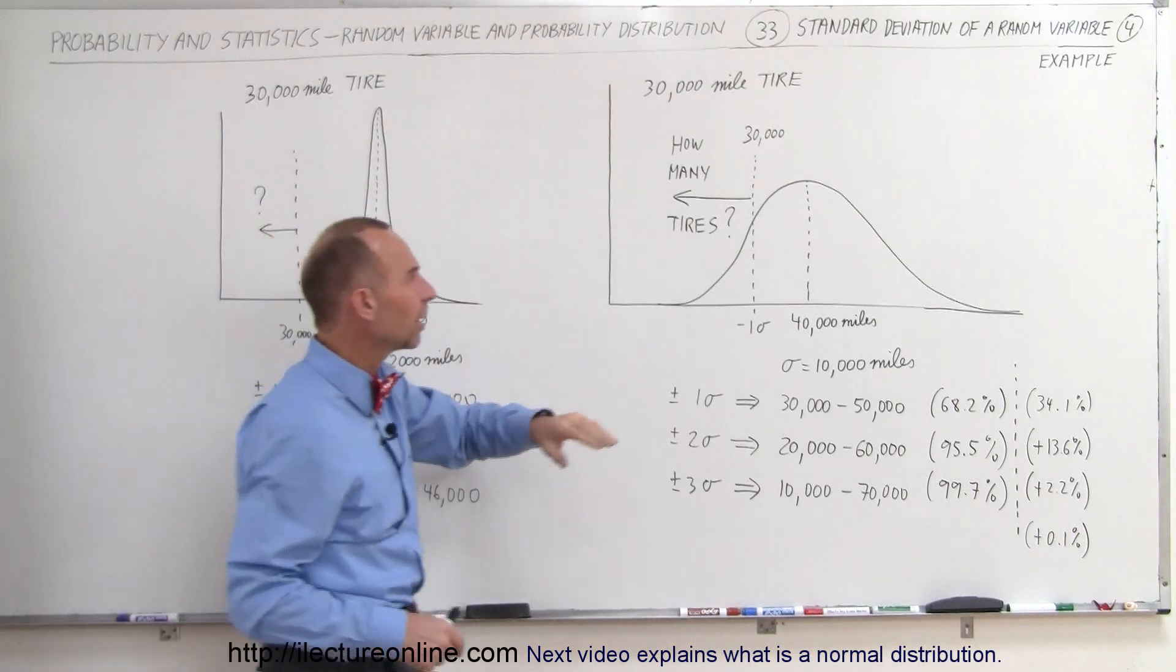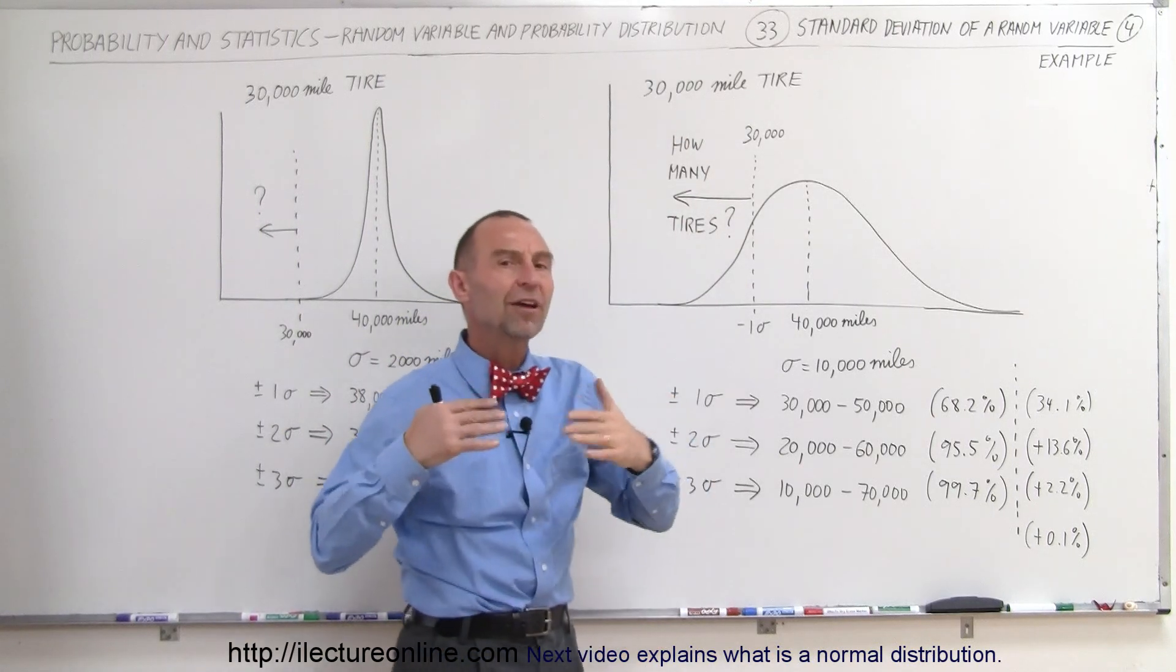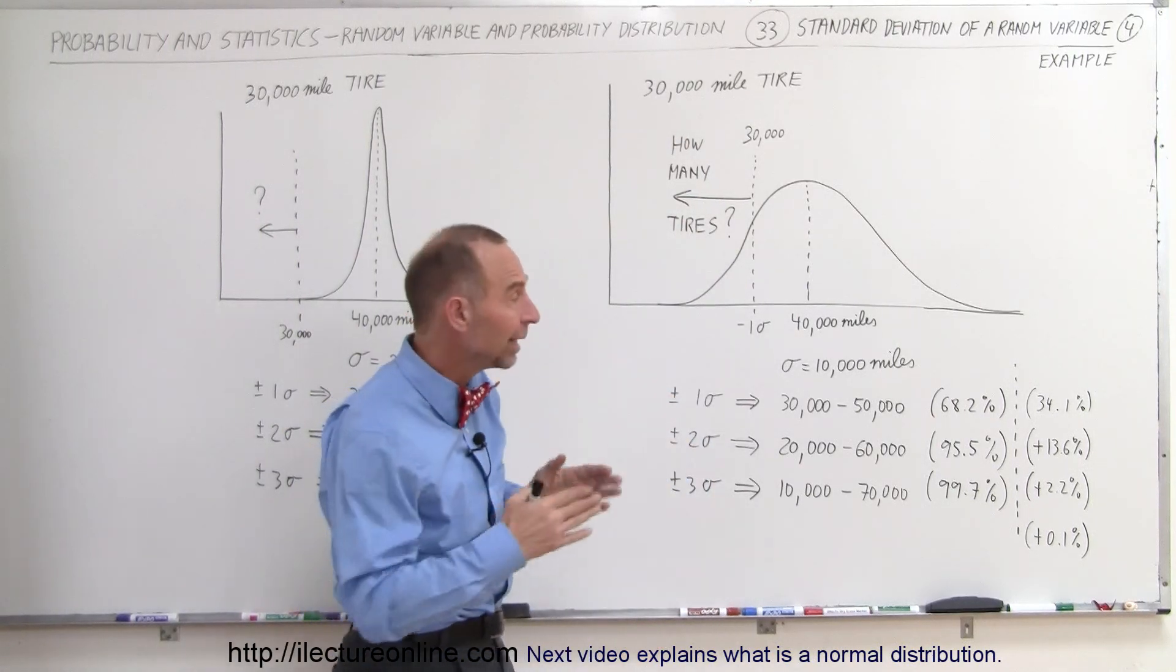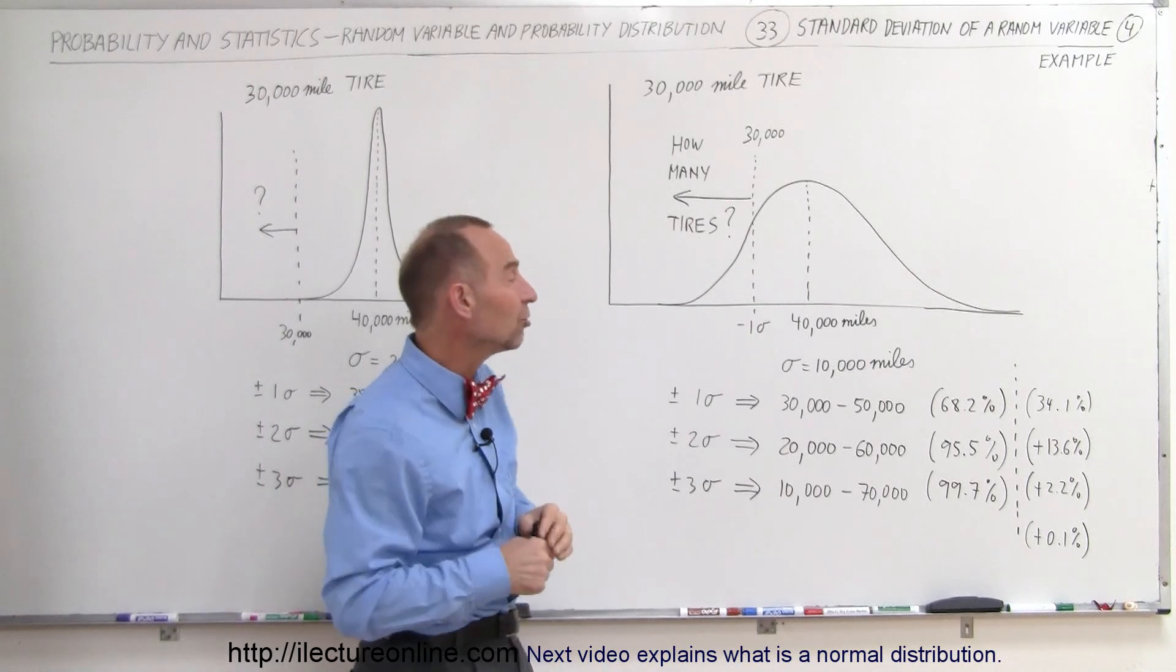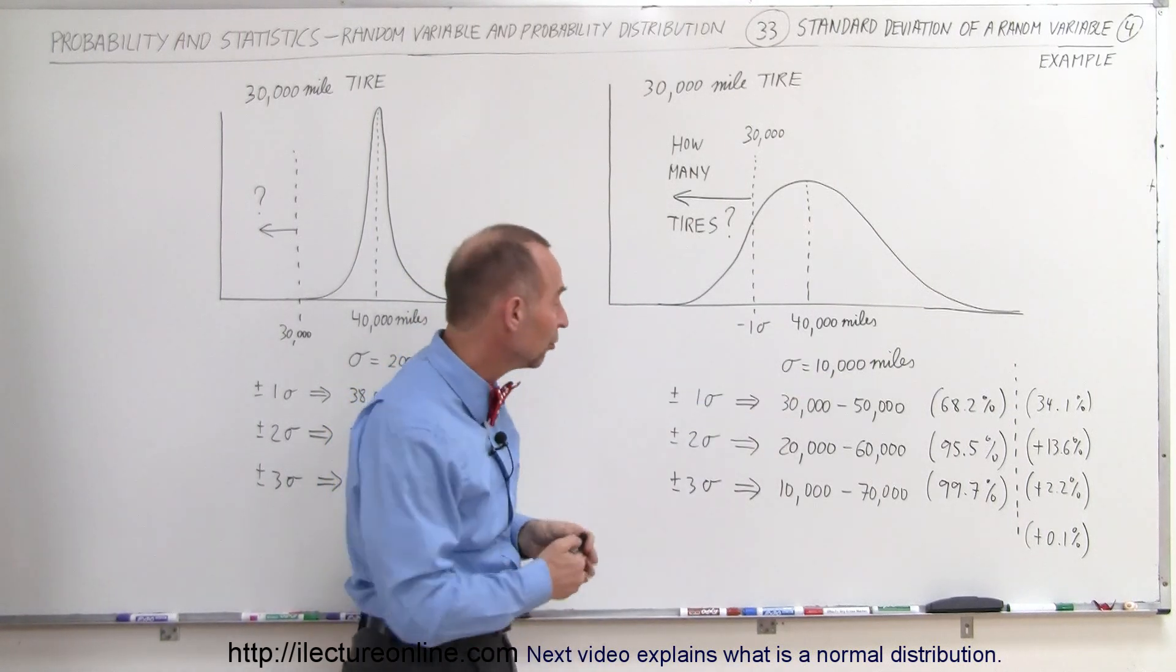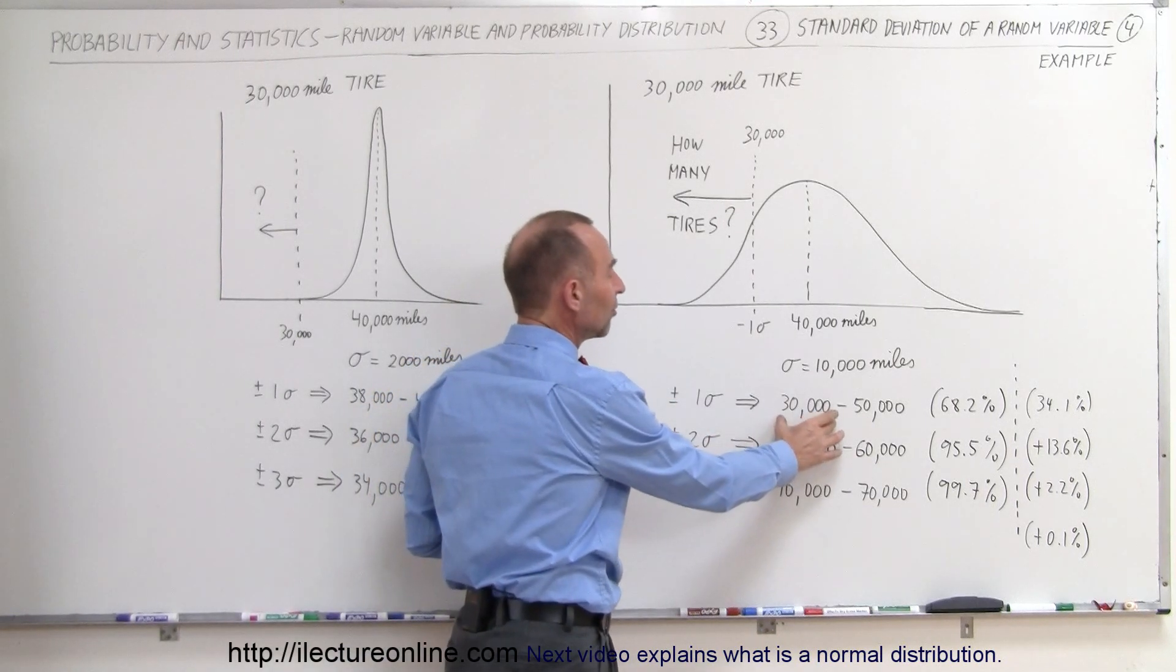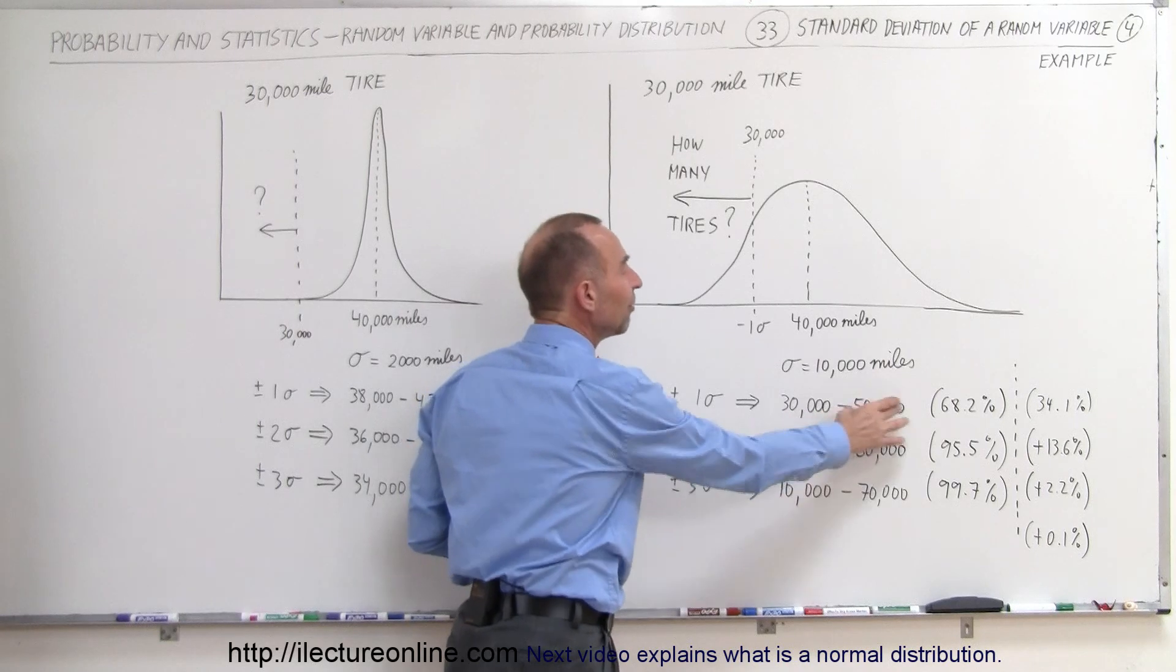Let's say we have a second tire company. They also produce 30,000 mile tires, but their manufacturing process is not as reliable and they have a much wider standard deviation. Let's say that their standard deviation is 10,000 miles. In other words, if you go plus or minus one sigma, that means the tires will then last between 30,000 and 50,000 miles.